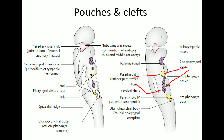The third pouch forms two structures: parathyroid 3 (the inferior parathyroid) and the thymus. The inferior parathyroid is in a lower position than the superior parathyroid because the thymus pulls it downward during its descent. The descent of the inferior parathyroid is arrested at the level of the lower pole of the thyroid, and it attains its final position on the posterior surface of the thyroid gland.